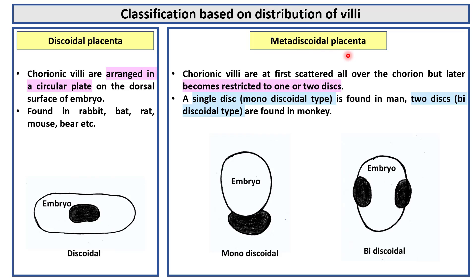Metadiscoidal placenta. In metadiscoidal placenta, the chorionic villi are at first scattered all over the chorion but later become restricted to one or two discs. A single disc — monodiscoidal type — is found in man, and two discs — bidiscoidal type — are found in monkey.